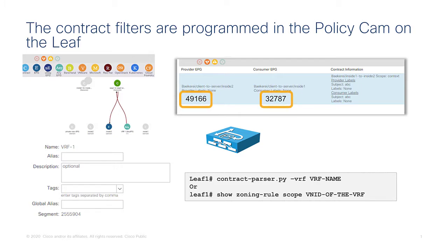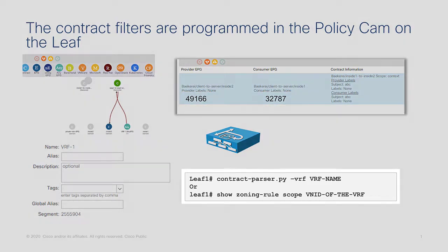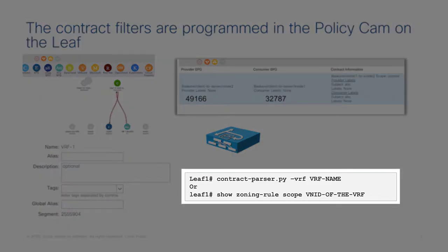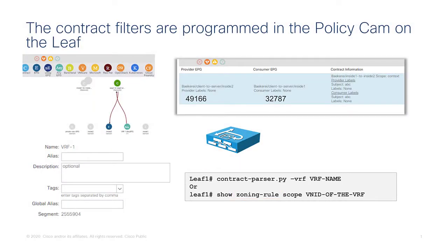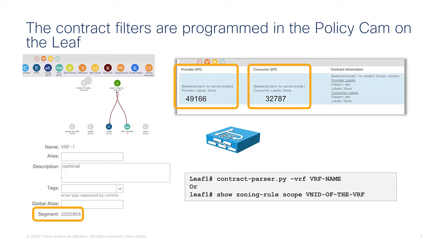You need to find the class ID numbers and then use commands to show the policy programming, which is also called the zoning rule table. This is organized per VRF because each VRF is handled independently. Traffic is segmented into different VRFs, so when you look at the rules, you also need to consider which VRF the traffic is forwarded into. The key numbers for troubleshooting are the class ID numbers of EPGs as well as the segment ID of the VRF.